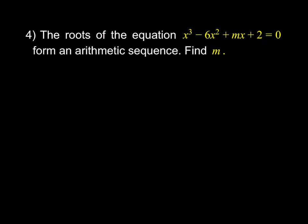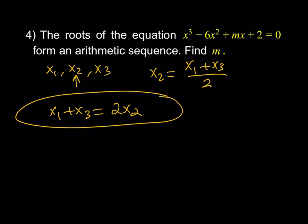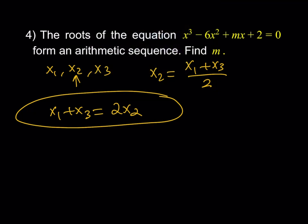Problem 4: the roots of a cubic equation form an arithmetic sequence. If the roots are x1, x2, and x3 in numerical order, x2 is the same distance from x1 and x3, meaning x2 is the average. This implies x1 plus x3 equals 2x2. For the cubic equation, x1 plus x2 plus x3 equals negative b over a, and since a is 1, that's negative b, which is 6.